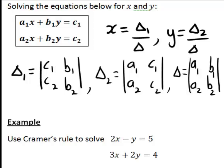So let's have a look at an example of applying this rule. Let's suppose we want to use Cramer's Rule to solve the equations 2x minus y equals 5, 3x plus 2y equals 4.